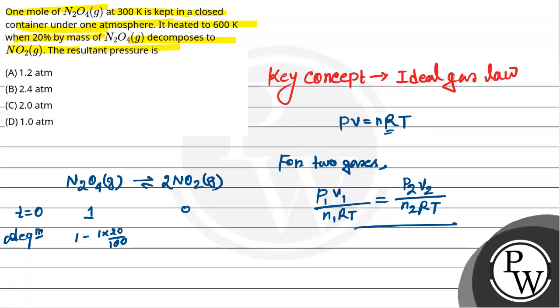The mass dissociated, the mass is formed. So this will be 2 into 20 over 100, that is 20%. So this will be 1 minus 0.2 and that is 2 times 0.2. Now this will be 0.8, this will be 0.4.